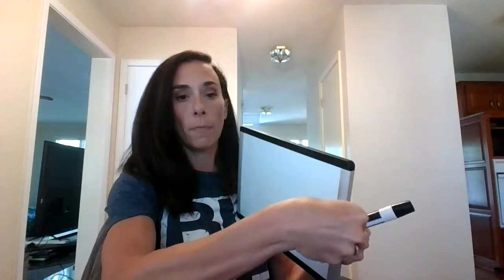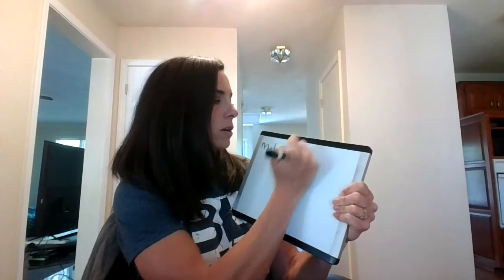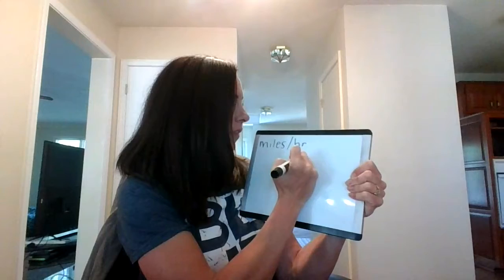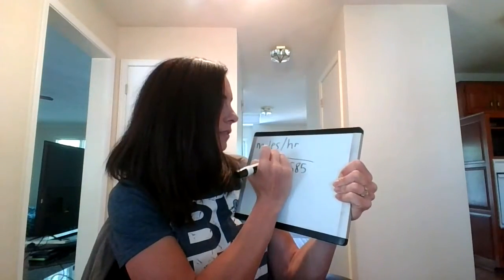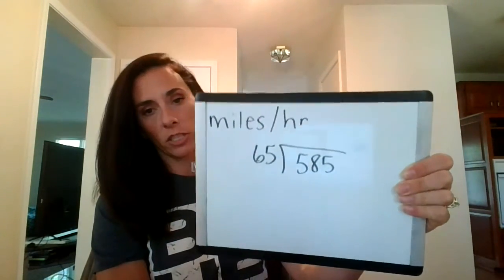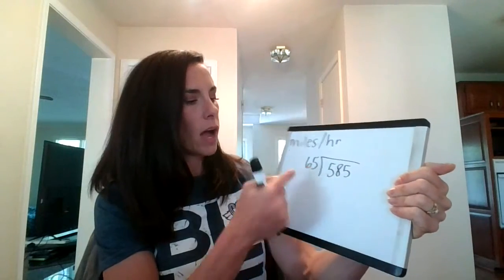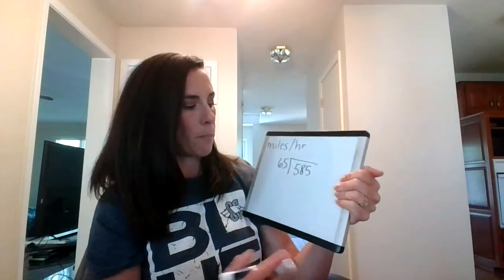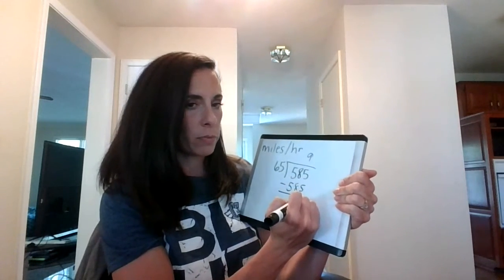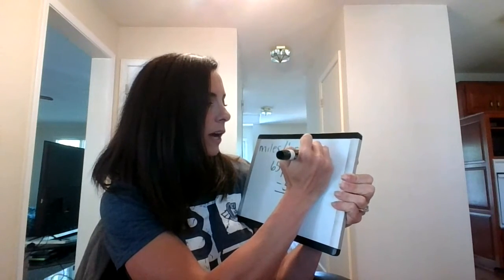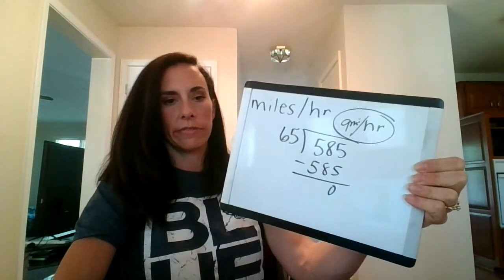What we're looking for is how many miles per hour. We're going to divide 585 by 65. You're going to end up having to do some math off to the side, but you can do a reasonable guess — if this was 60 and this was 58, about how many times? It's going to be 9 exactly. So 65 miles per hour is our final unit rate. Unit rate — you're just dividing.